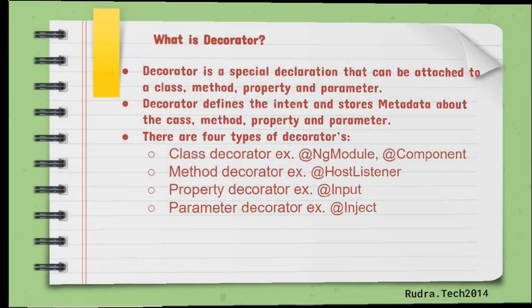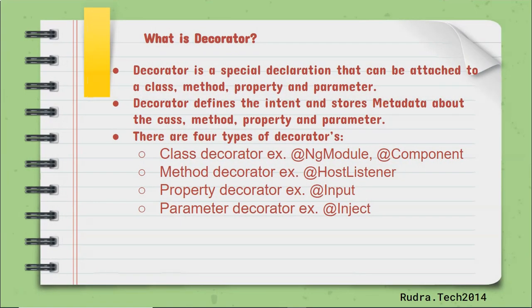A decorator is a special declaration that can be attached to a class, method, property, or a parameter. A decorator defines the intent and stores the metadata about the class, method, property, or parameter. That is, the decorator is a special function that will tell us what this class is about and how it is going to behave.